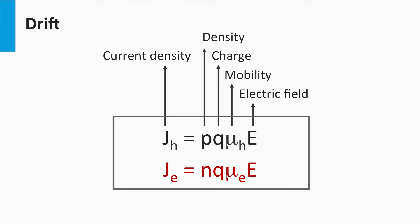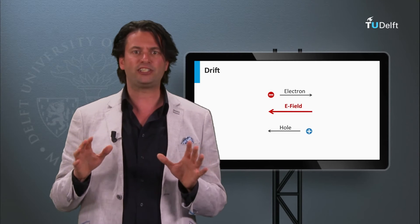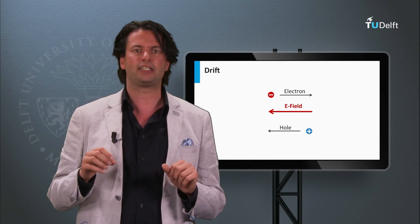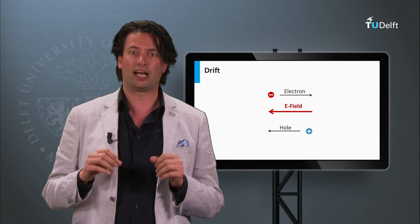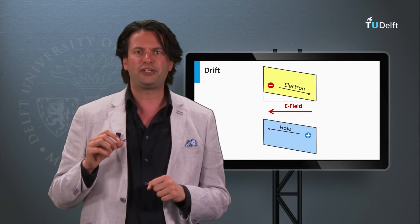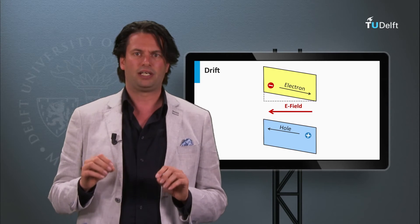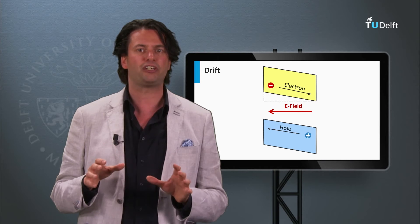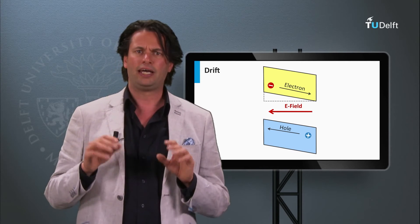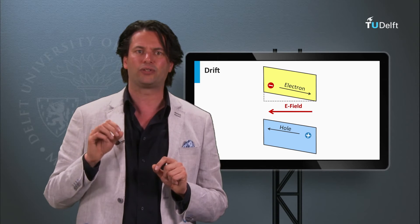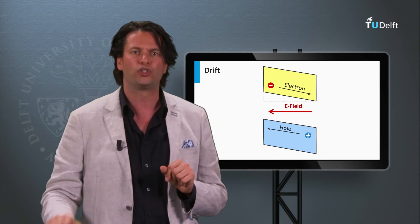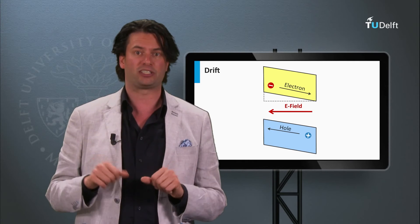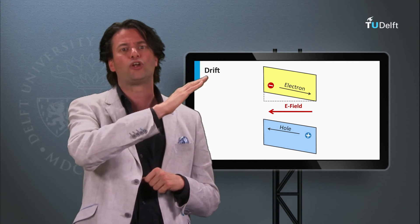Similarly, the hole current density induced by an electric field is given by the product of the density of holes P, the electron charge Q, the mobility constant μ, and the electric field E. The presence of an electric field can also be represented in an electronic band diagram. Let's consider again an electric field pointing to the left. In the figure you can see a conduction and valence band. The electric field induces a slope over the valence band and conduction band. The slope of the electronic band is positive in the direction of the electric field. The excited electrons in the conduction band will on average always move down the slope of the conduction band when a slope is present, while holes will on average always move up the slope of the valence band.